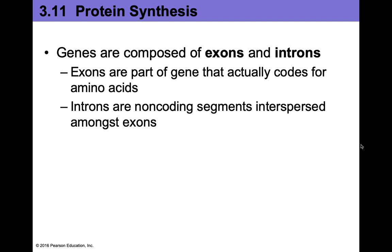Our genes, which are part of our DNA, when we make the mRNA from that gene — the transcript — it's going to be made of both exons and introns. It's the opposite of what you'd think: the exons are the parts that actually code for the amino acid, the stuff we want to keep, whereas the introns are the non-coding sequences that we're actually going to be removing later in the process of mRNA processing.